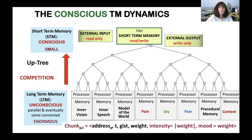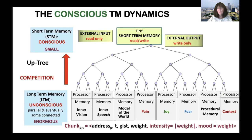Formally, we define a chunk as a six-tuple: chunk(p,t) consists of the address of the processor, the time, the gist (a small amount of information the processor wants to convey), the weight (the importance of that information), the valence (plus or minus), and the intensity (the absolute value of the weight) — sort of the pressure the chunk has in the competition. The mood starts off as the weight. As chunks move up the up-tree, the address, time, gist, and weight stay the same, but the intensities and mood change.